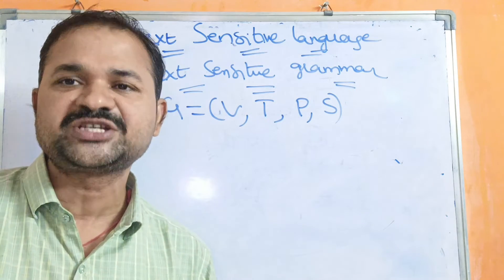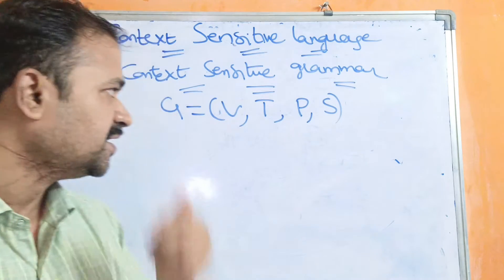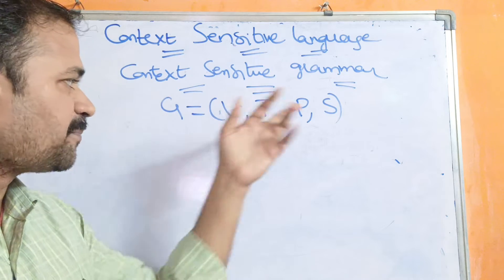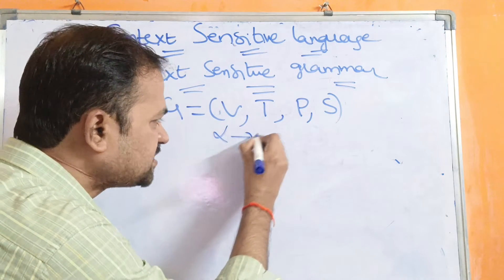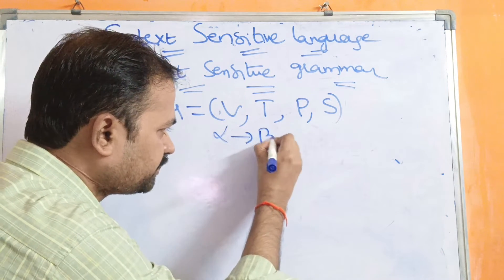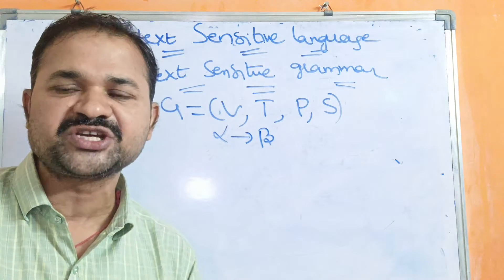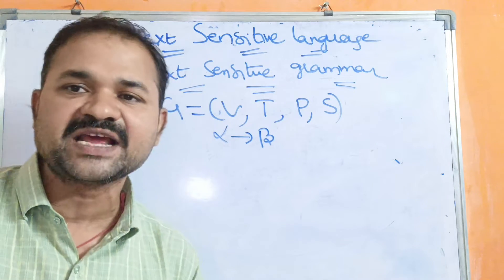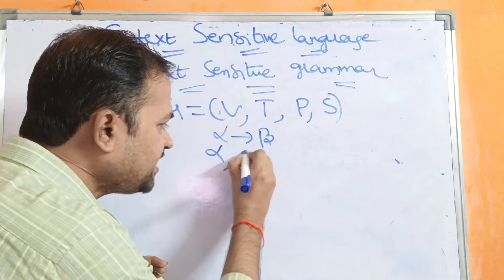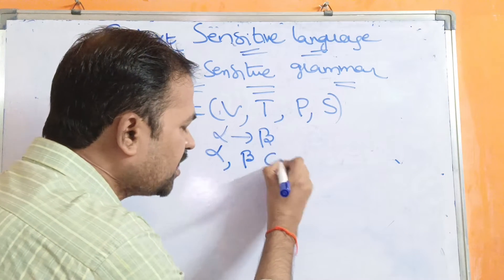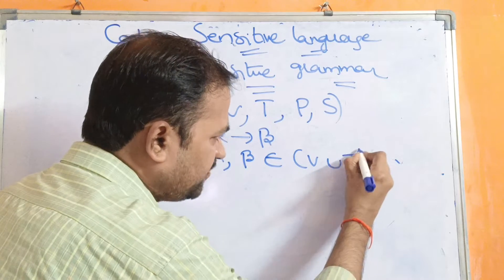P means a set of production rules. S means starting symbol. Here the productions are of the form alpha implies beta. Alpha means left hand side production. Beta means right hand side production. Here the productions contain combinations of variables and terminals.